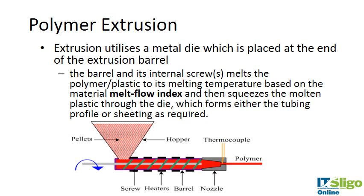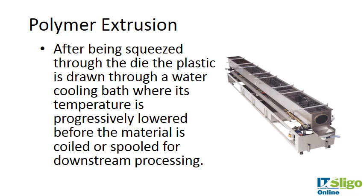Extrusion uses a metal die placed at the end of the extrusion barrel to form the piece, rather than a mold. The die gives the ejected polymer its shape. Like injection molding, the barrel and its internal screw melts the polymer to its melting temperature based on the melt flow index, squeezing the plastic through the die to form the tubing profile or sheeting. After being squeezed through the die, the plastic is drawn into a water cooling bath where temperature is progressively lower, before the material is coiled or spooled.